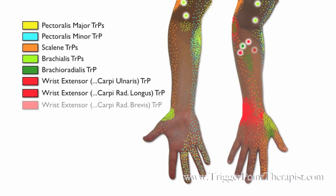And lastly of our wrist extensors, we have the extensor carpi radialis brevis muscle, which refers pain to the posterior wrist near the center or the midline.